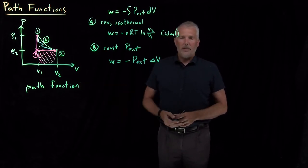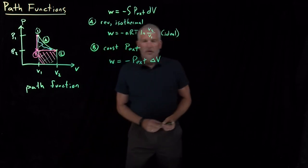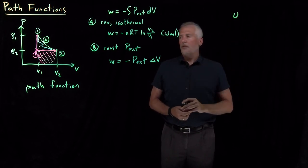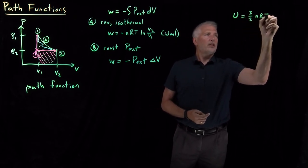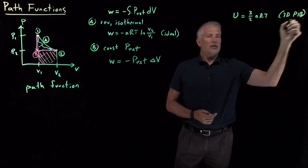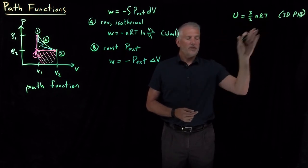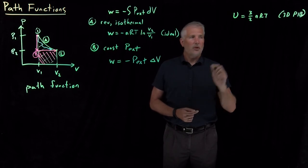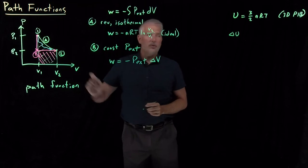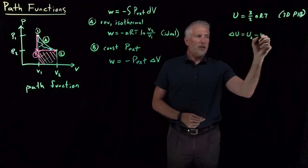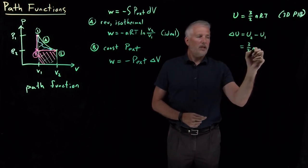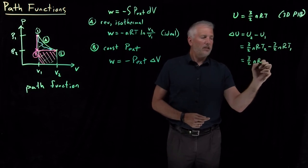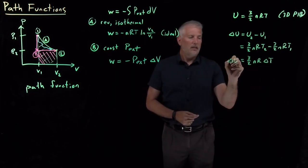The good news is that many properties are not like work and are not path functions. To give an example of something that works differently, let's consider internal energy. For ideal gases — anything obeying the 3D particle-in-a-box model under classical conditions — the internal energy is 3/2 nRT. To calculate the change in energy going from state 1 to state 2, that difference is just U2 minus U1, which equals 3/2 nRT2 minus 3/2 nRT1, or 3/2 nR times delta T.